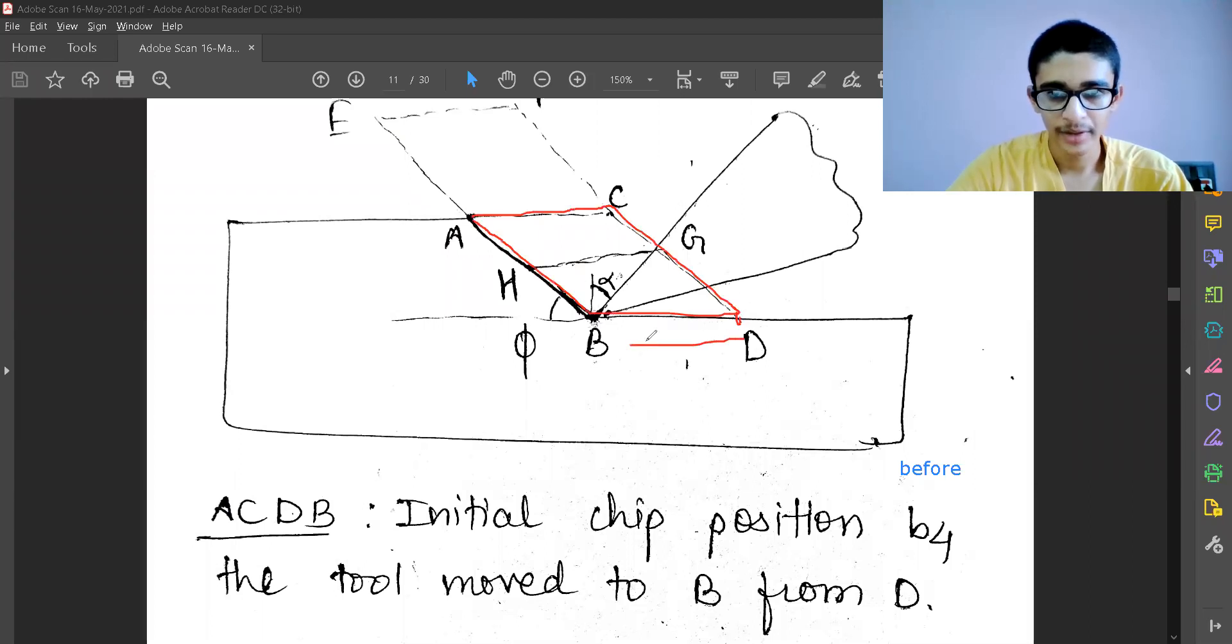But when my tool moved from D to B, my chip has moved upward and is now here. Let me use another color. When it is at point B, my chip has moved, and this is the final position of that chip.